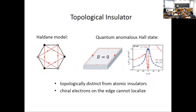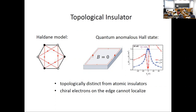A very different kind of electronic state is the topological insulator. One of the earliest examples is the Haldane model on the honeycomb lattice. Haldane introduced complex hoppings that microscopically correspond to loop current states on the lattice, and showed that this state supports a quantum Hall effect without any external magnetic field. This quantum anomalous Hall state has one-way moving edge states on the boundary.